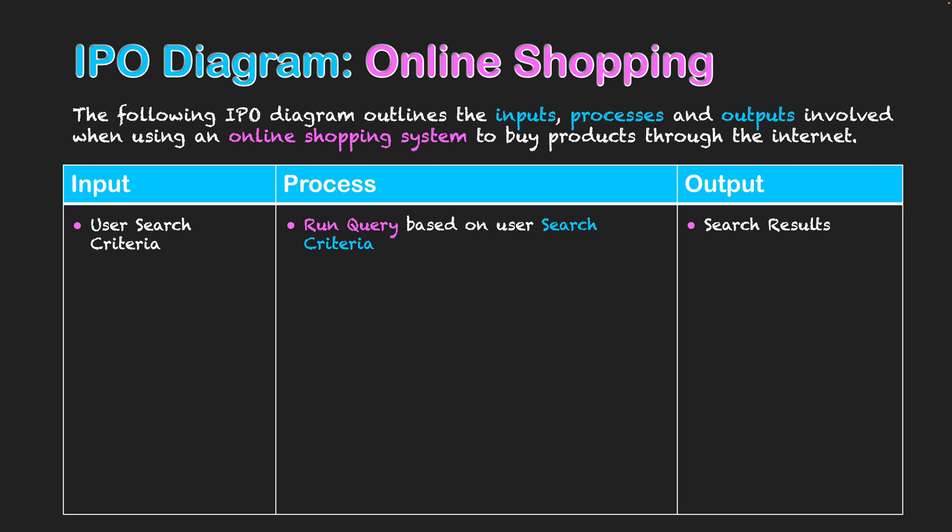The output of the system will be the search results based on their search criteria. You'll notice a theme in the processes column: the processes themselves will be in pink writing, and in blue writing I'll be writing the inputs and outputs that you can see in the input and output columns, to help build upon that relationship.